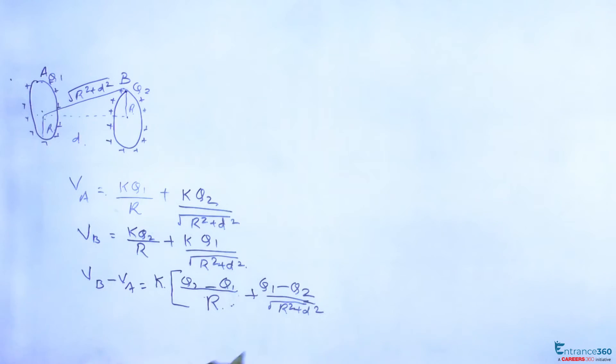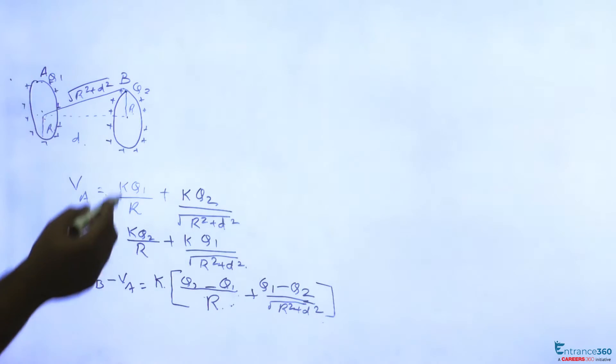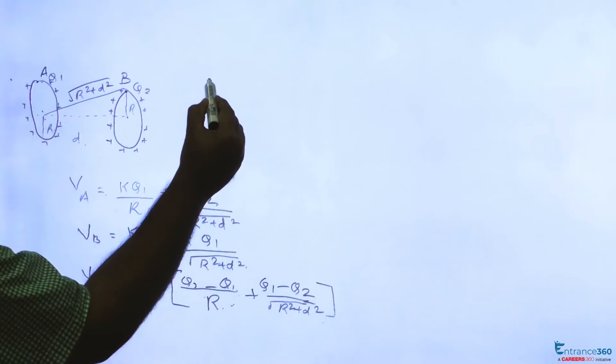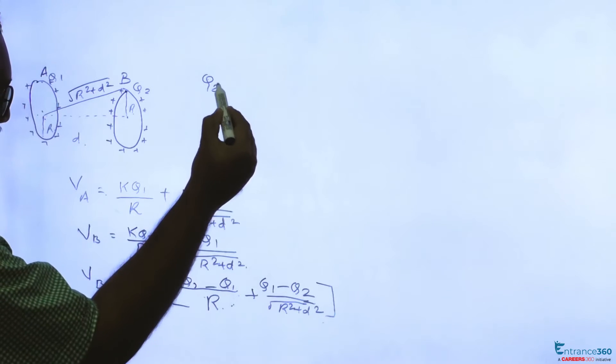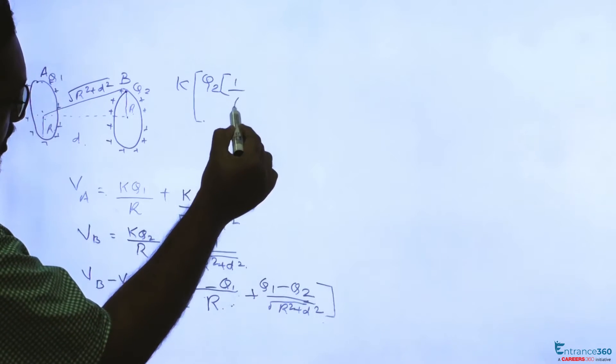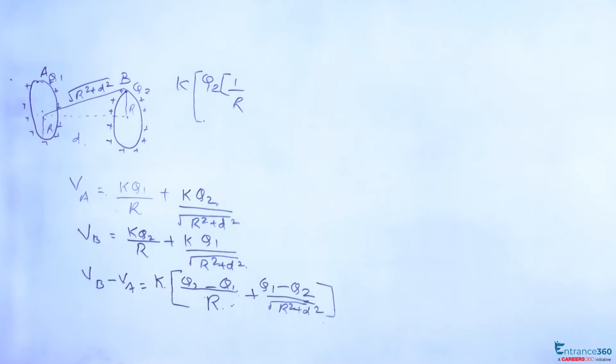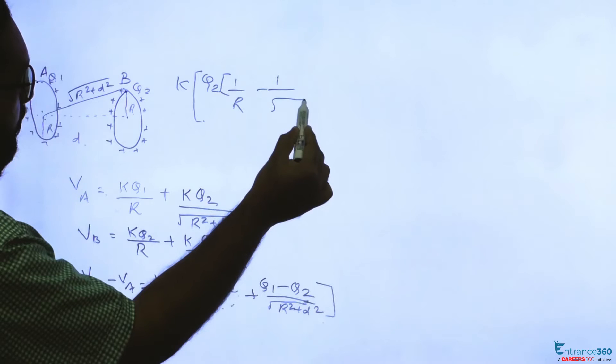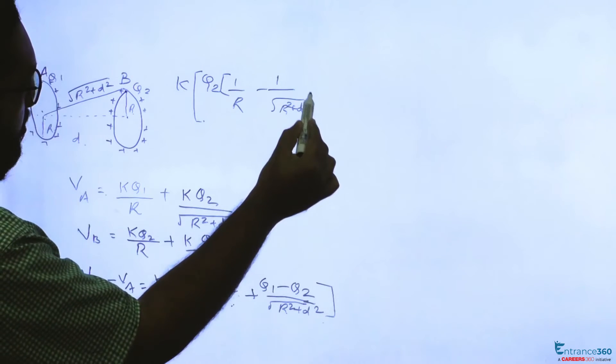This is the potential difference. Now we have to find out the work done, so for that first we can simplify this. We can take K Q2 into 1 by R minus 1 by root of R square plus D square.